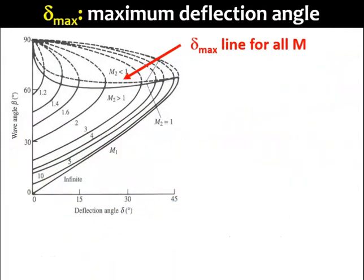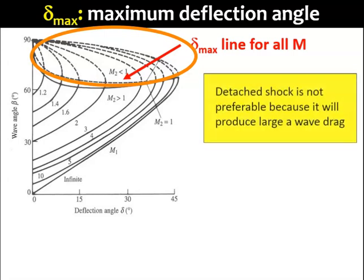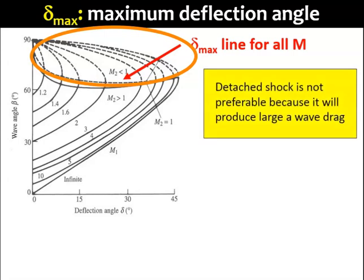I've mentioned that a detached shock is stronger than an attached shock. A detached shock will produce a bigger flow compression that leads to bigger pressure changes across the shock. This is not preferable at all, because we will have a bigger wave drag on the object. The question now is, can we change a detached shock into an attached shock? The answer is yes, we can, within certain limits.